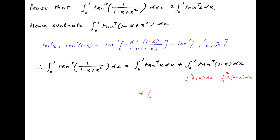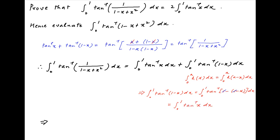It therefore follows that the integral from 0 to 1 of tan inverse (1 minus x) dx is equal to the integral from 0 to 1 where we replace x with (1 minus x) in the integrand. The right-hand side simplifies to the integral from 0 to 1 of tan inverse x dx. Using this result,